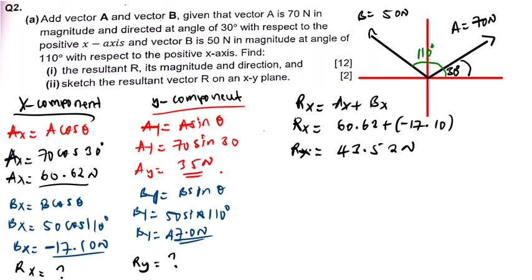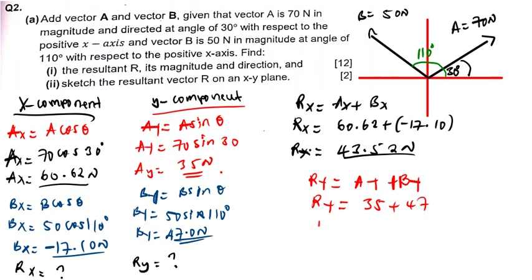I also need to find Ry. Ry is the result of Ay plus By. Ay is 35 and By is 47, so adding these two: 35 plus 47 gives 82 newtons.